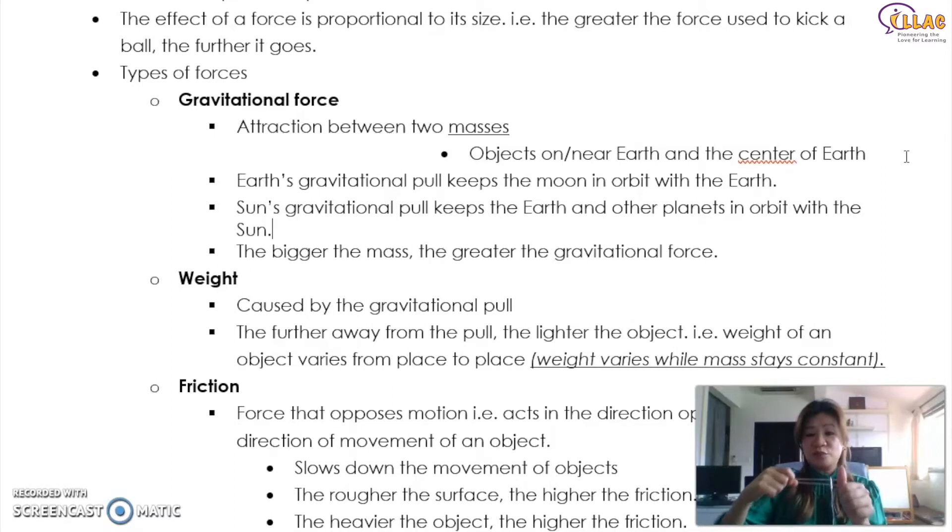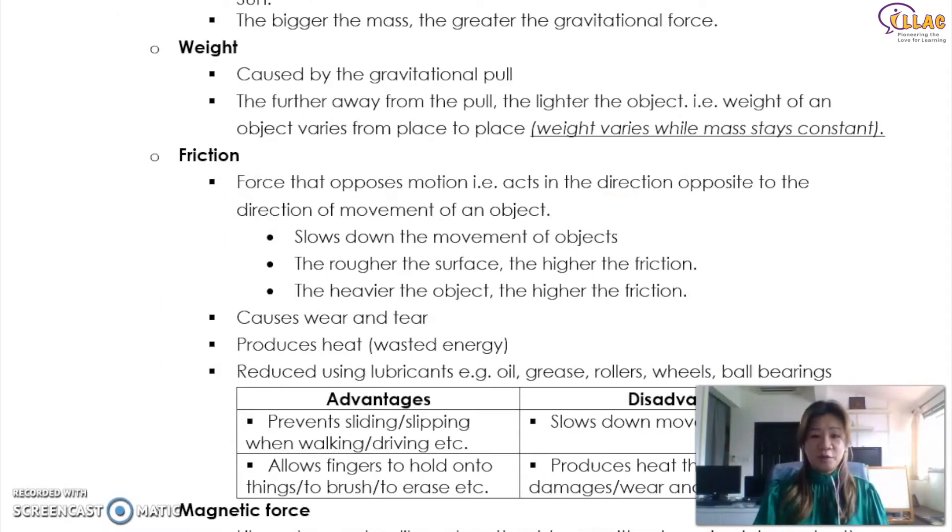And so the bigger the mass of the object, the greater the gravitational force. That means the further outreach it can go. So the sun's gravitational pull, for example, the sun is bigger than earth. Therefore, the sun's gravitational pull keeps the earth and other planets in orbit with the sun. So the earth can only be pulling one thing, which is the moon, but the sun is able to pull many, many items all together at the same time.